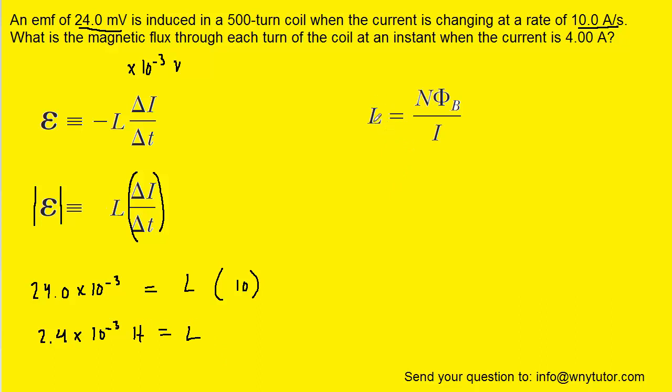We can next remind ourselves that the inductance is related to the number of turns in the coil, the magnetic flux, and the current by the following equation. Since we're trying to solve for the magnetic flux, we can multiply both sides of this equation by the term I over N so that the I's and N's cancel on the right-hand side.